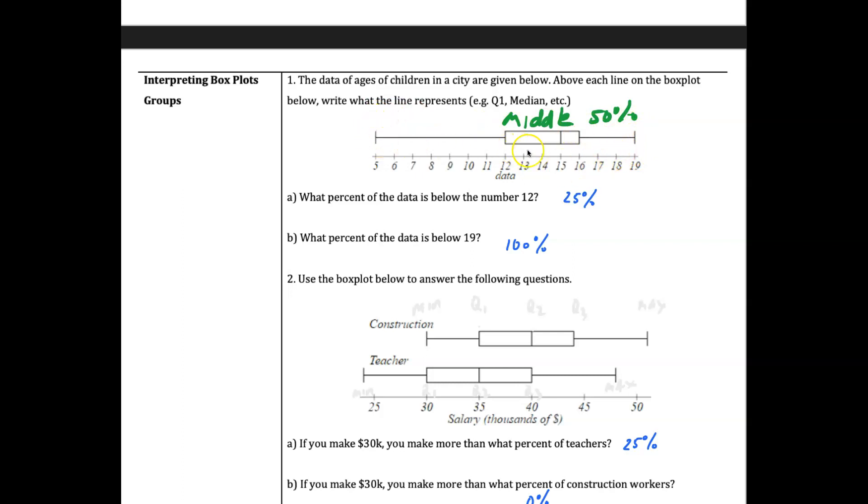You can kind of see the spread here. This box is called the interquartile range, the number from Q1 to Q3, from 6 to 12. So the overall range is 14, but the interquartile range, which we call IQR, in this case would be 4. I'm just going through some of the important features of box plots.